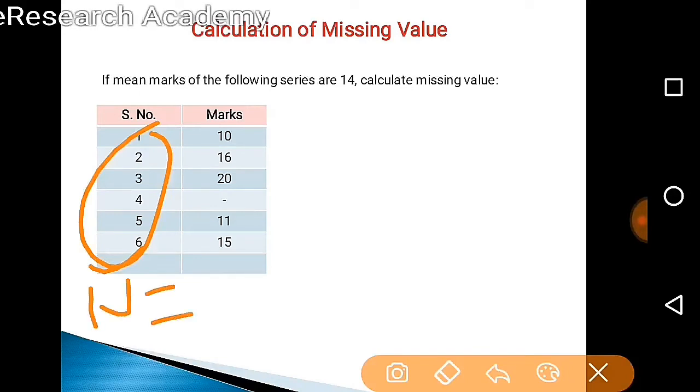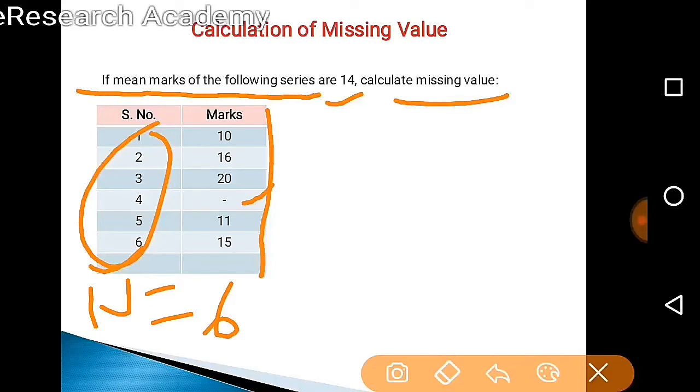These 6 are the students and these are the marks: 10, 16, 20, and one mark is missing here, 11 and 15. We are asked here that if mean marks of the following series are 14, calculate the missing value. We have to find out the missing value here.